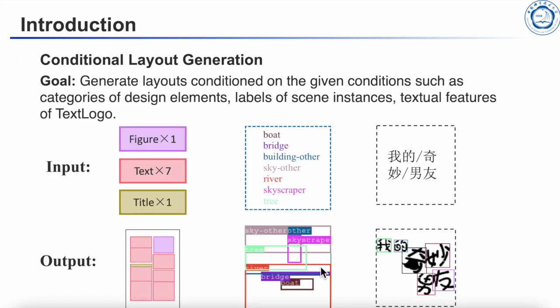Introduction. The goal of conditional layout generation is to generate layouts conditioned on the given layout attributes, such as categories of design layout elements for graphic layouts, labels of scene instances for scene layouts, and texture features for text logo layouts.